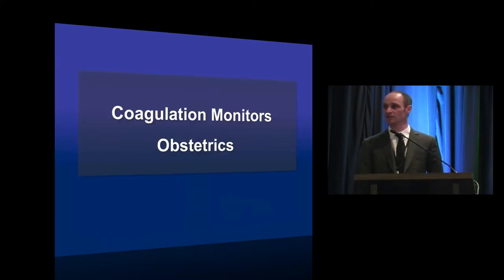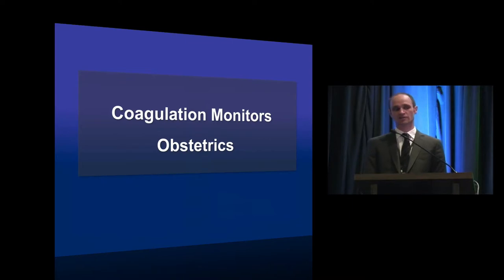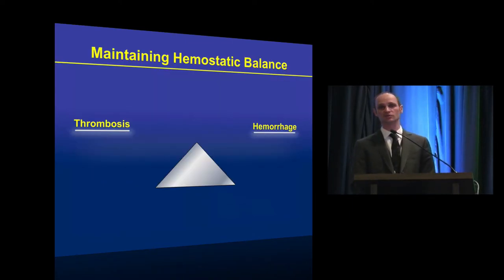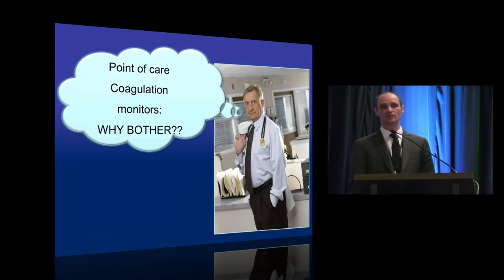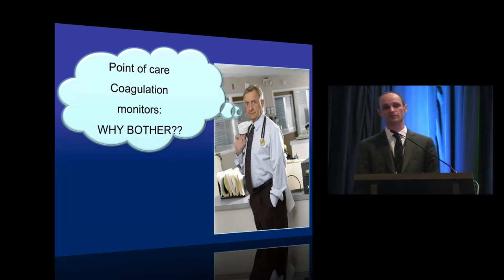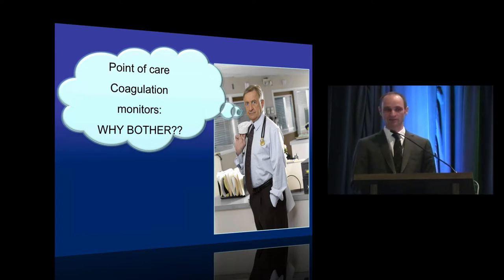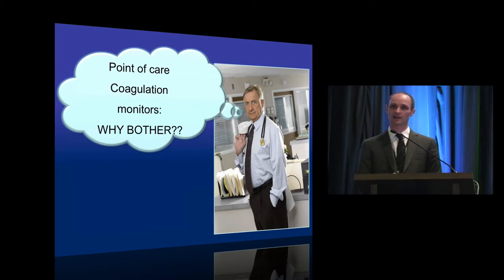We're at the halfway mark, so we'll take a big shift and look at coagulation monitors and their use in obstetrics. When looking after patients in the OR or during labor and delivery, ideally we want to maintain hemostatic balance — avoiding excessive hypercoagulability that increases the risk of venous thromboembolism, while also avoiding coagulation profile changes that may precipitate coagulopathy and more severe blood loss after delivery. Some in the audience may be thinking: I can take blood from the patient, send it to the lab, and get coagulation indices such as the PT, PTT, INR, and fibrinogen — so why bother with point-of-care coagulation monitors?